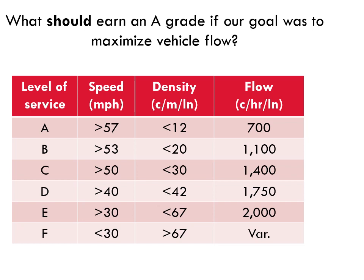Let's look at this one more way. What should earn an A grade if our goal was to maximize vehicle flow? LOS E maximizes flow according to the table. Still, we might prefer LOS D just to avoid tipping over into LOS F conditions. In other words, LOS E is pretty unstable. We definitely don't want LOS A if our goal is to maximize flow.